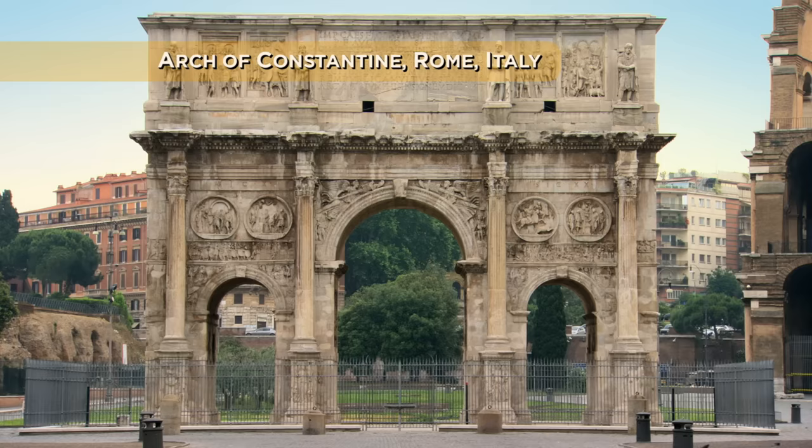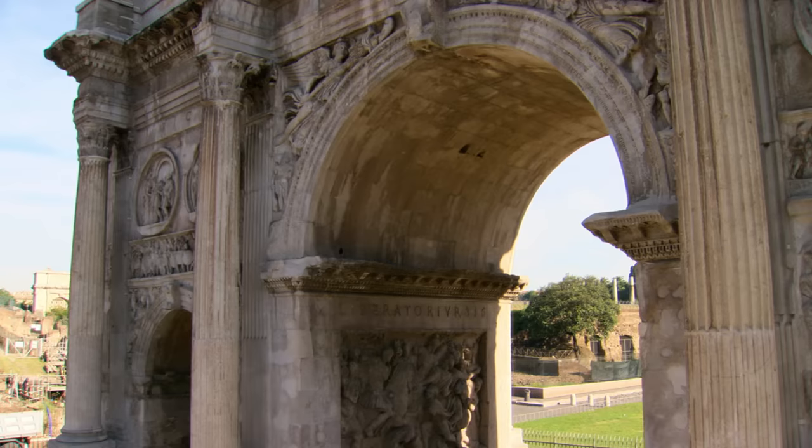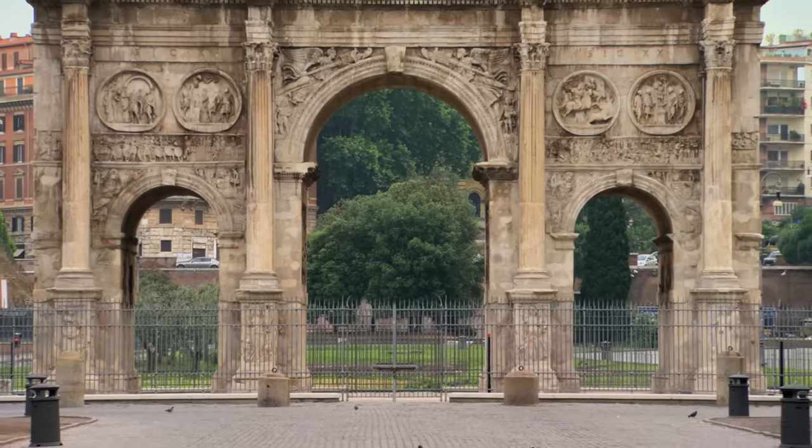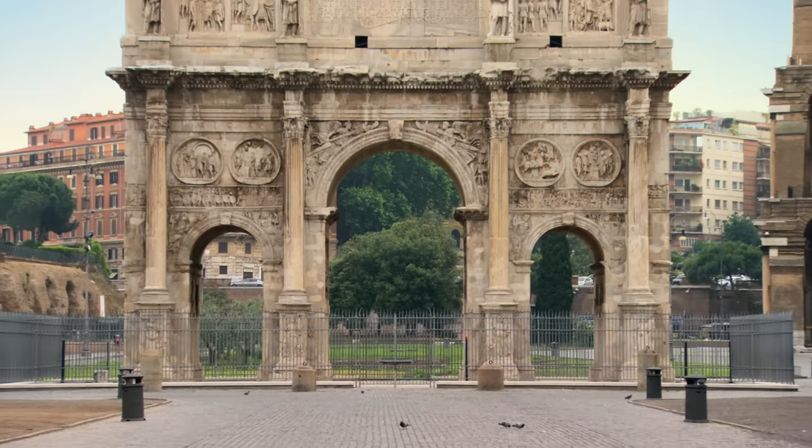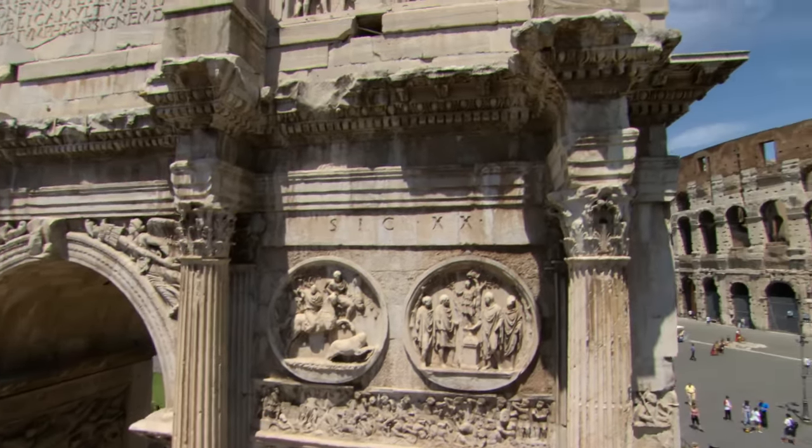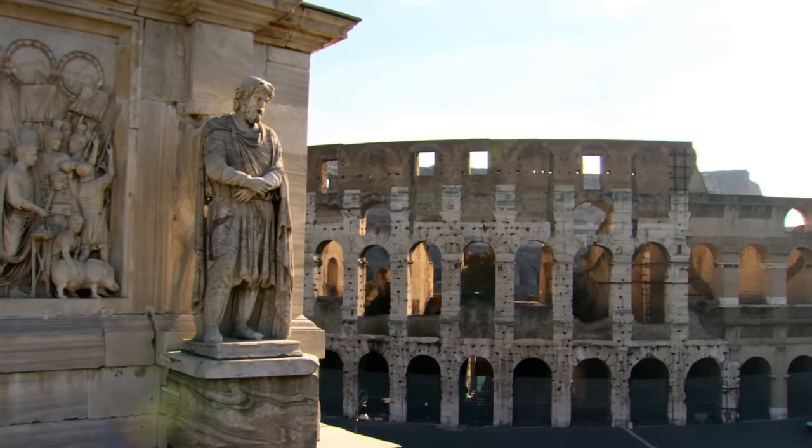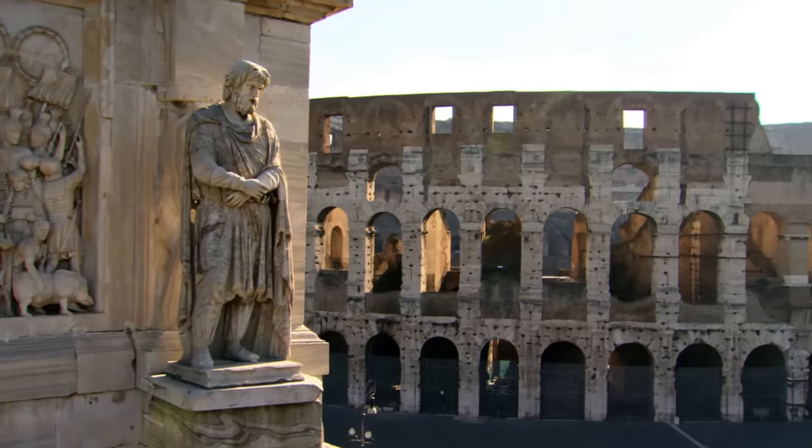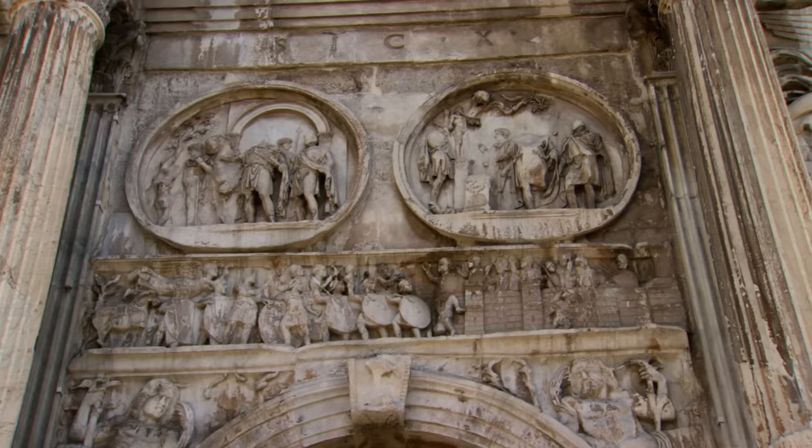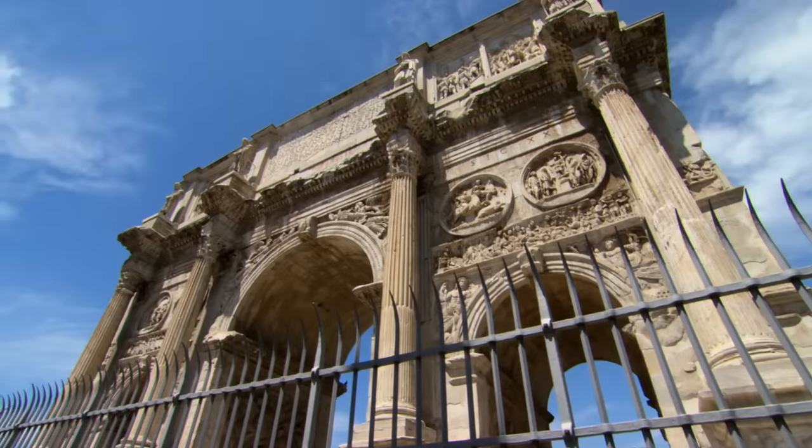But there's a much older work of art that tells a different tale. It's called the Arch of Constantine. And Constantine himself had it built here, in the center of Rome, to celebrate his victory over Maxentius. Over six stories high, Constantine's arch was erected just 91 meters from the Colosseum, where Christians were once killed for sport. For fear of damage, the Department of Antiquities in Rome hasn't given anyone permission to examine it up close for more than 30 years. Until now.